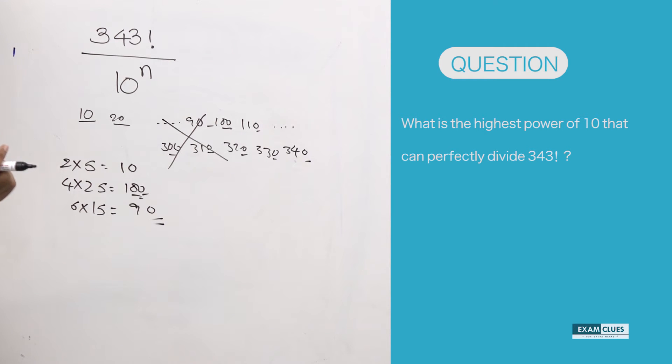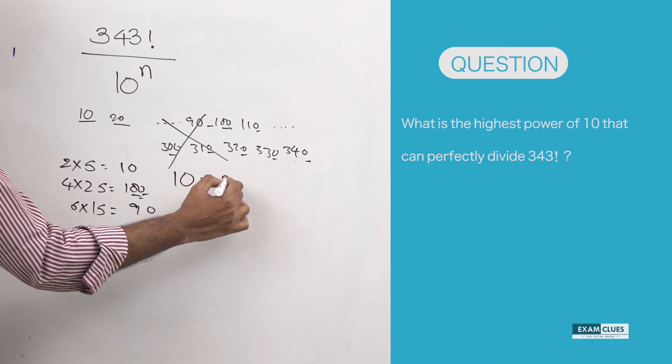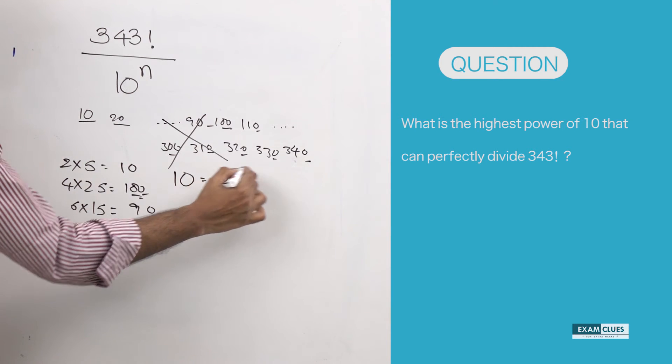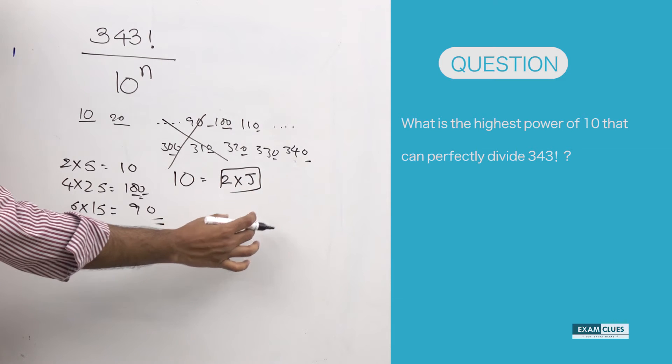There's also 6 times 15, or let's say 90—you get another zero here. So to get a zero or a ten, what do we need? We need one 2 and one 5.